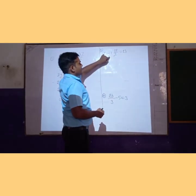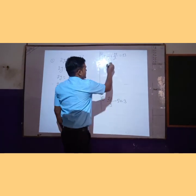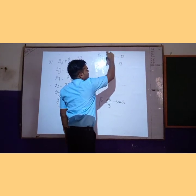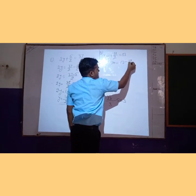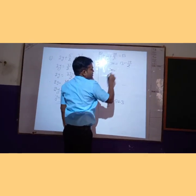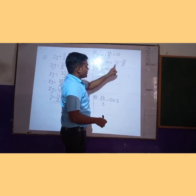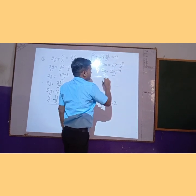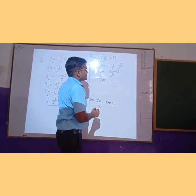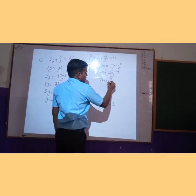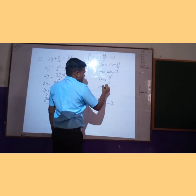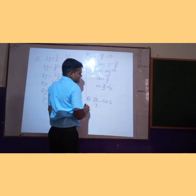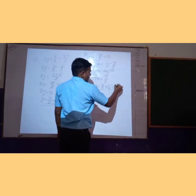Fifth problem: 7m plus 19 upon 2 is equal to 13. We transpose 19 upon 2 from left to right. We make the denominators common — 13 becomes 26 upon 2 — so 7m is equal to 26 minus 19 upon 2, which is 7 upon 2. We transpose 7 from left to right — it is multiplied so it will be divided. The 7s cancel, so m is equal to 1 upon 2. That is the answer.